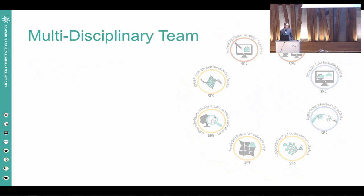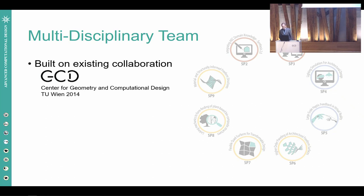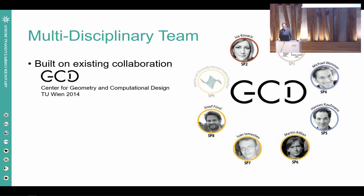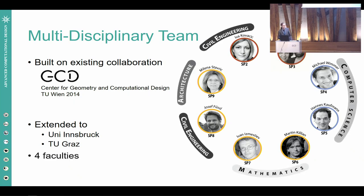To achieve this, we require a multidisciplinary team. We can build on the existing collaboration in the form of the Center for Geometry and Computational Design, founded in 2014 at TU Wien, including researchers well-known in their disciplines. For this project, we also extended it with knowledge in architectural design and material experimentation provided by the University of Innsbruck and TU Graz. In total, the project encompasses four faculties: computer science, mathematics, civil engineering, and architecture.